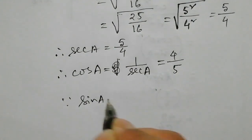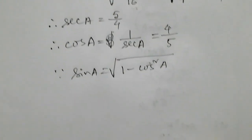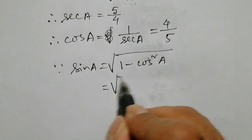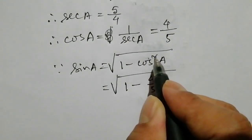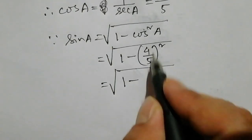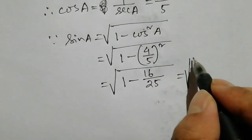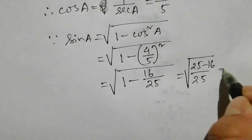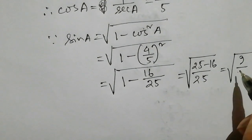Now we find sin A using the formula: sin A equals root over 1 minus cos square A. Substituting cos A equals 4 by 5: 1 minus 16 by 25 equals 9 by 25. So sin A equals 3 by 5.